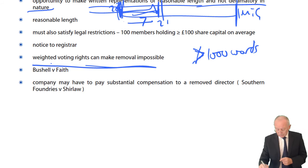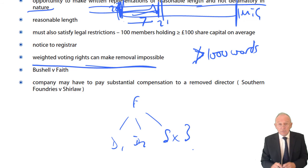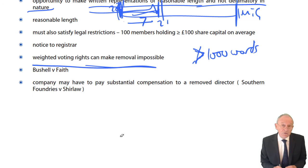Weighted voting rights can make removal impossible. If a director has weighted voting rights — where his shares count three times the normal amount when any of those directors is proposed to be removed — then the affected director has three times the normal voting power. So weighted voting rights can stop dismissals. The company may also have to pay substantial damages, as there may be a breach of contract where the company is faced with having to pay substantial damages.